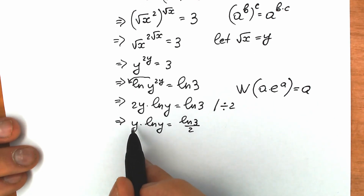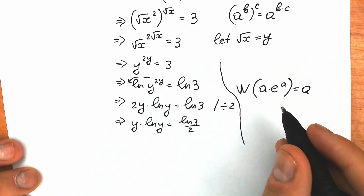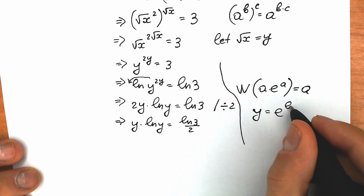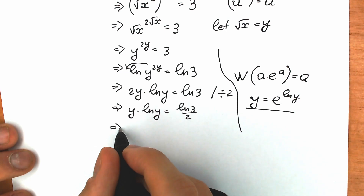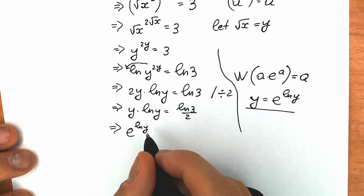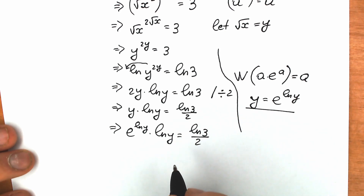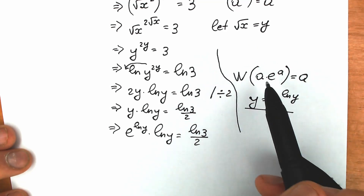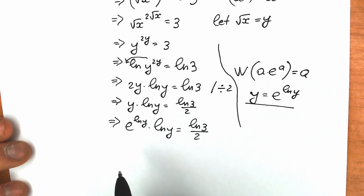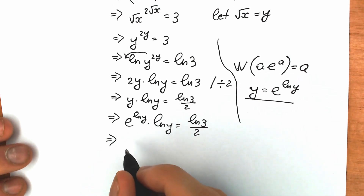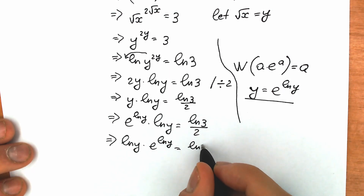Right now let's try to create something like that on the left side. Instead of y let's write the next thing: let's write e to the power natural log y — this is absolutely the same thing. So as a result we have e to the power natural log y, times natural log y, equal to natural log 3 over 2. And for better understanding let's rearrange: natural log y times e to the power natural log y equal to natural log 3 over 2.